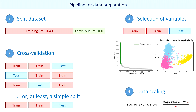We now know how to prepare omics data for machine learning algorithms. Let's stop here for the first part. In the next video we will train several models and compare their performance on our leukemia dataset.